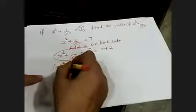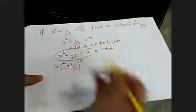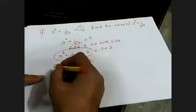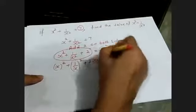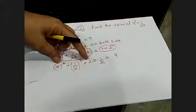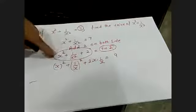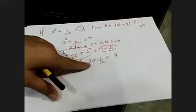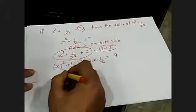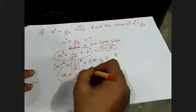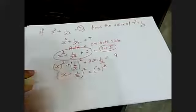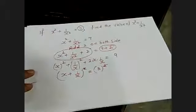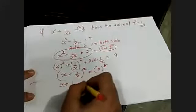When you add 2 on both sides, x squared plus 1 upon x squared plus 2 becomes x plus 1 upon x whole square, because A squared plus B squared plus 2AB equals A plus B whole square. Here A is x and B is 1 upon x. The right-hand side becomes 7 plus 2 equals 9, which is 3 squared. Cancelling the powers, x plus 1 upon x equals 3.